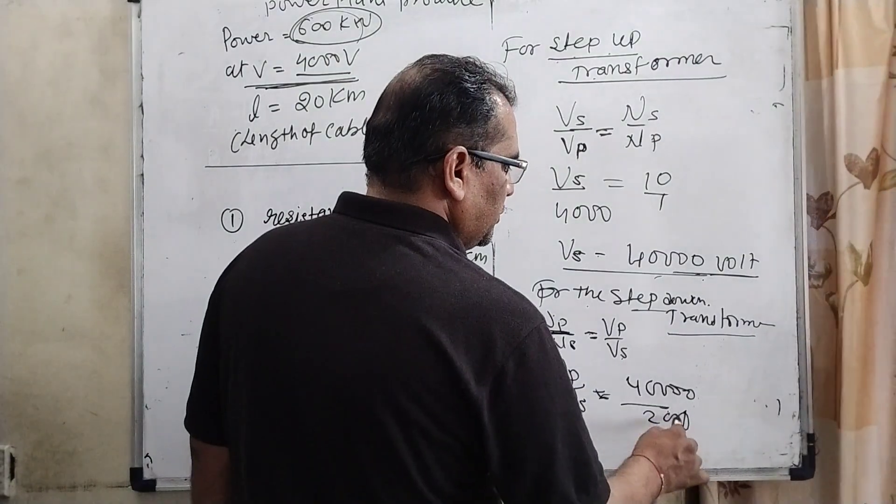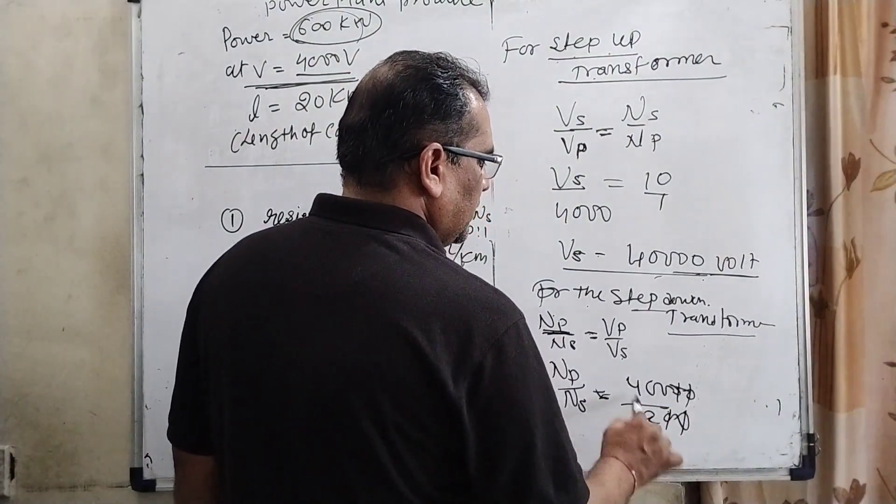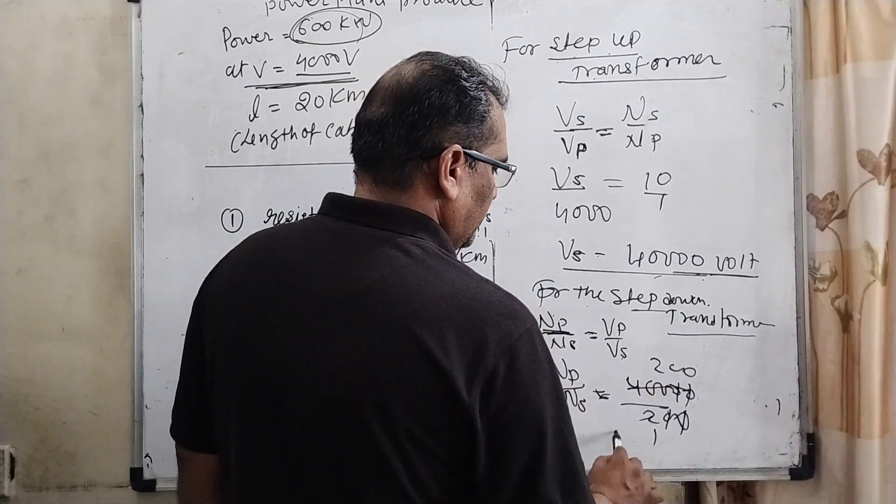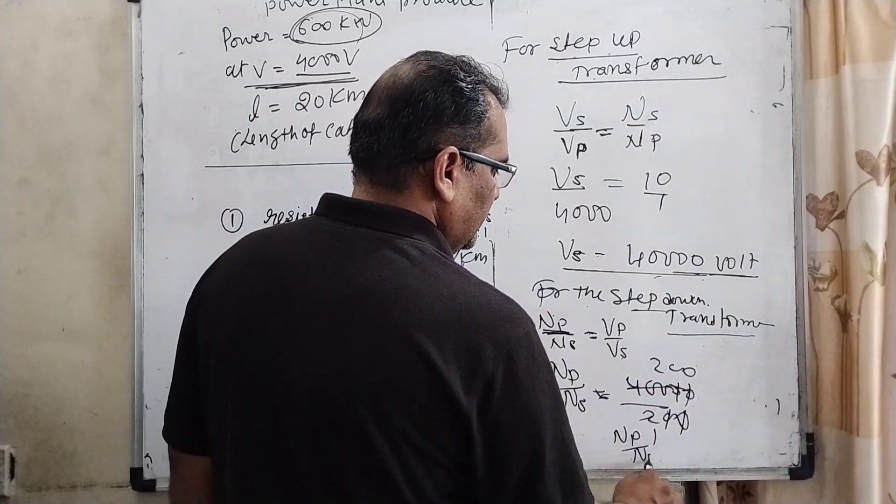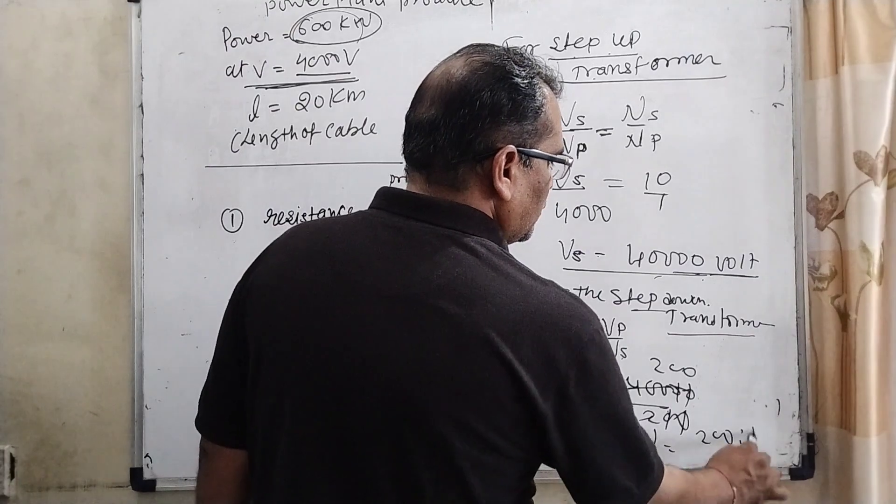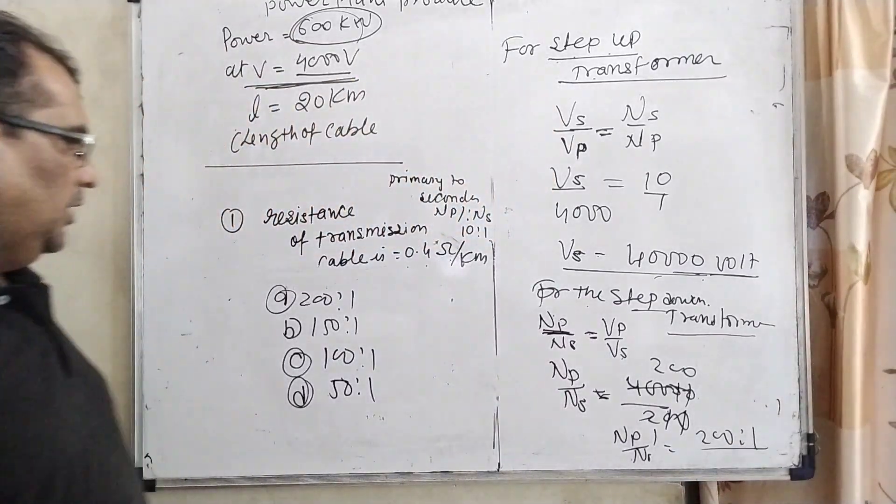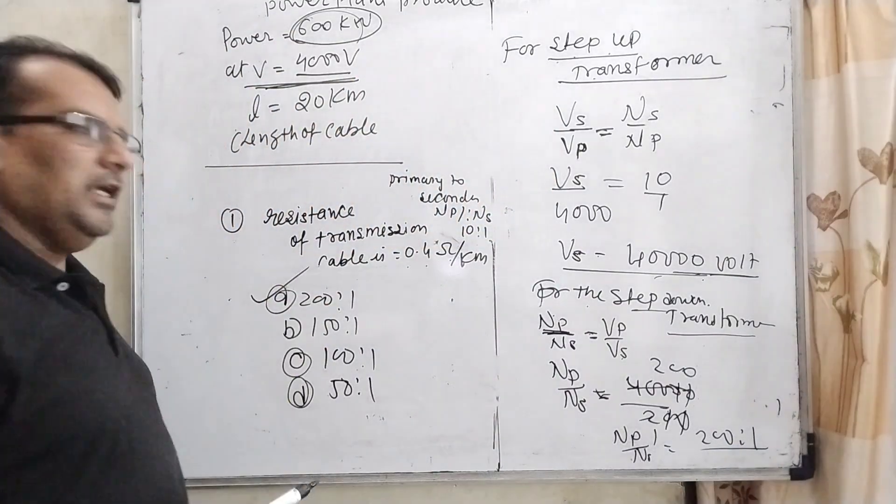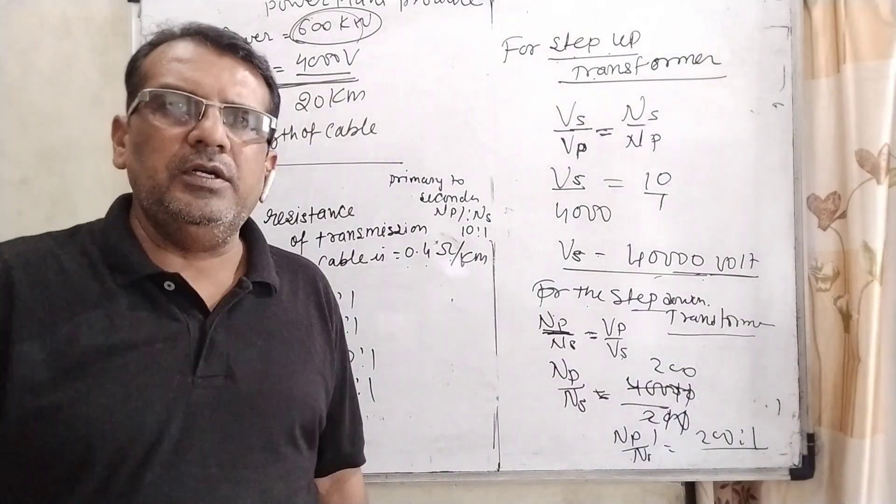So here zeros cancel out, we get 200 is to 1. So therefore Np is to Ns that is the ratio is 200 is to 1. So now here first option is correct. I hope you understood this question.